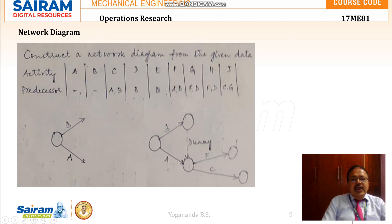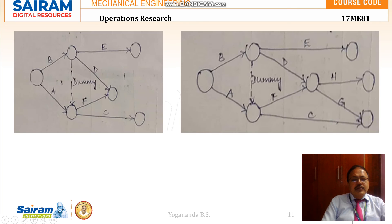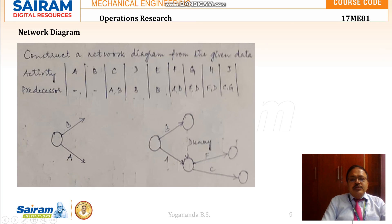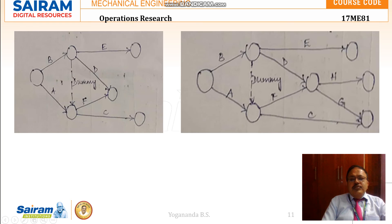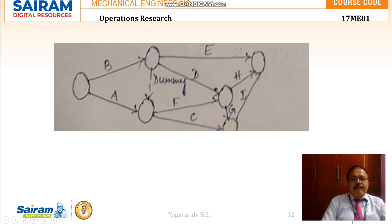For G and H, D and F are the predecessors. Once D and F are over, from that event we start the two activities G and H. For the last activity I, G and H are the predecessors. This is the diagram before completing the final diagram.